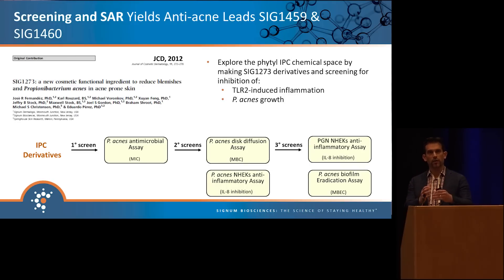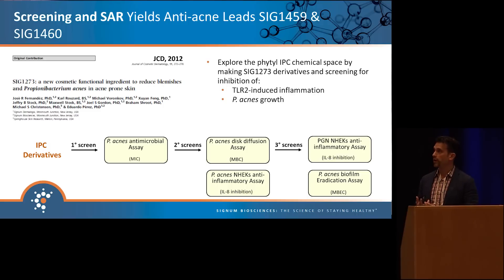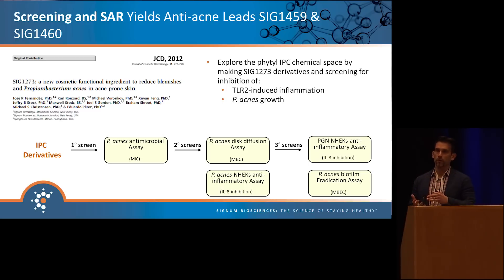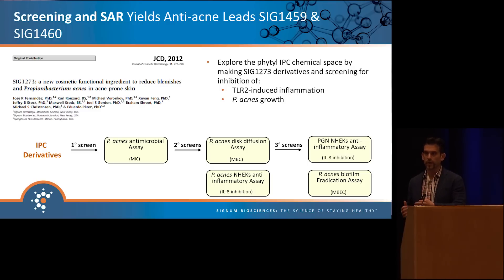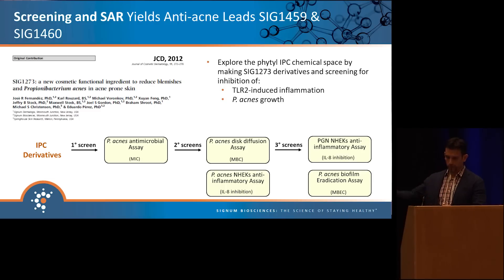Jumping back to phytocysteine IPCs and their relevance for acne: at the end of 2012, we published a paper on SIG1273, our first phytocysteine IPC, demonstrating anti-inflammatory and antimicrobial activity with some anti-acne properties. We set up a screening paradigm looking for antimicrobial activity — measuring MIC and MBC — as well as biofilm eradication, and retaining anti-inflammatory activity. We set up a medicinal chemistry program, screening compounds, getting SAR data, making modifications, and iterating.